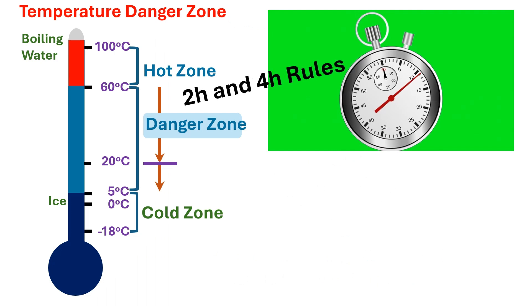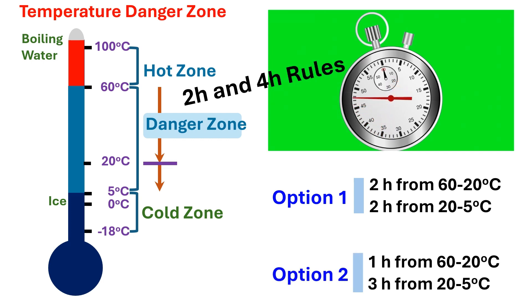There are 2 hours and 4 hours rules. Option 1: we need to cool within 2 hours from 60 to 20 degrees C, and within 2 hours from 20 to 5 degrees C. Option 2: we need to cool within 1 hour from 60 to 20 degrees C, and within 3 hours from 20 to 5 degrees C.